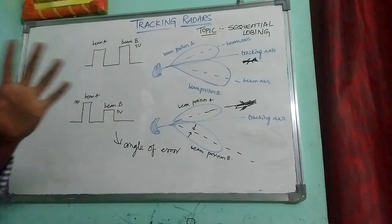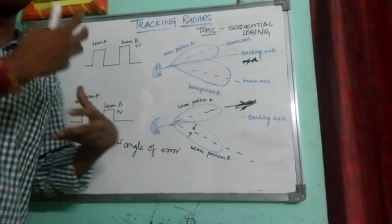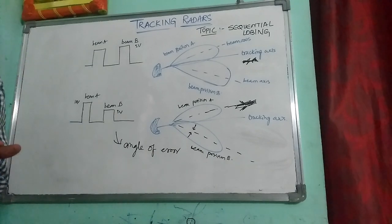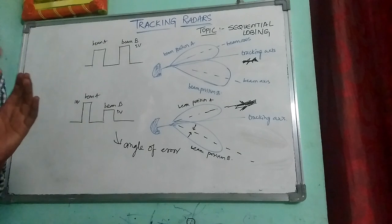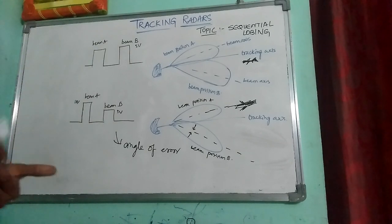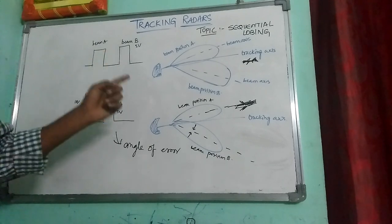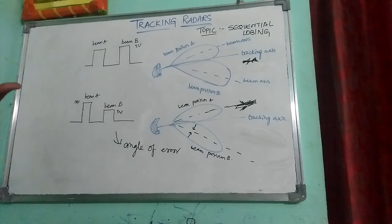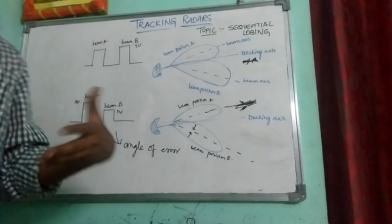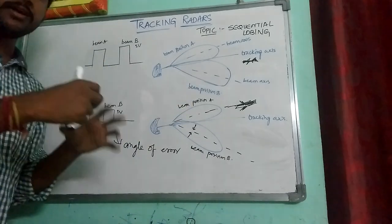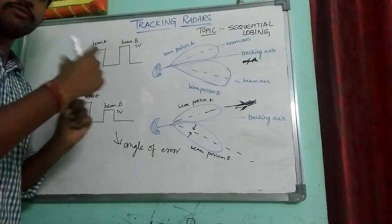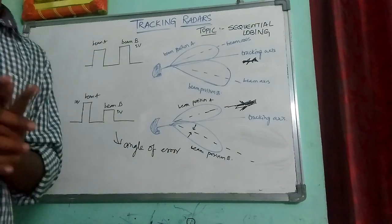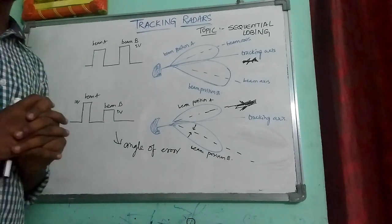This tracking technique is used in ground-based anti-aircraft fire control systems and fire control radars. It is also used in airborne interception radar, which provides directional information for homing an aircraft — not an accurate position of the target, but the direction of the target. So this is about sequential lobing. In the next video, we will see what conical scanning is. That's all for this video. Thank you.